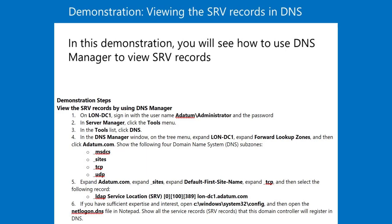Then click adatum.com. Show the following four DNS subzones: _msdcs, _sites, _tcp, and _udp. Step 5: Expand adatum.com, expand _sites, expand Default-First-Site-Name, expand _tcp, and then select the following record.